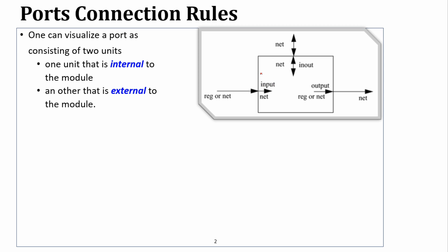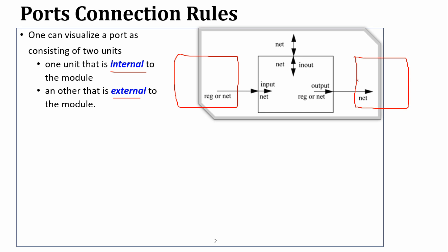Port connection rules: first of all, we need to consider a module as an internal module. But the other module is an external module. For example, this module is an external module. This module has many modules and sub-systems as a collection or combination. So in Verilog, we have a small piece of circuit as a module design.